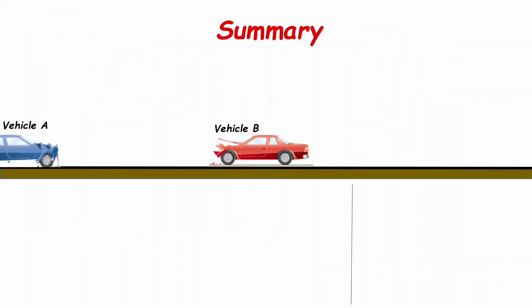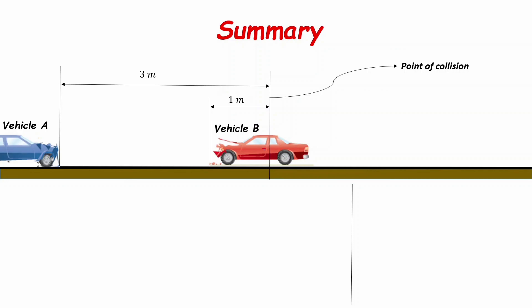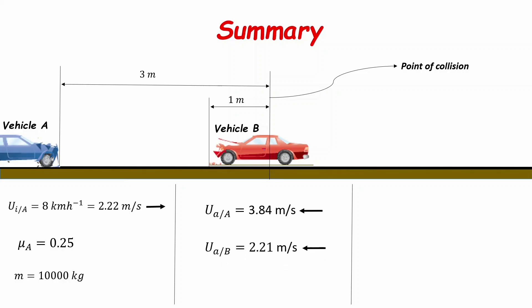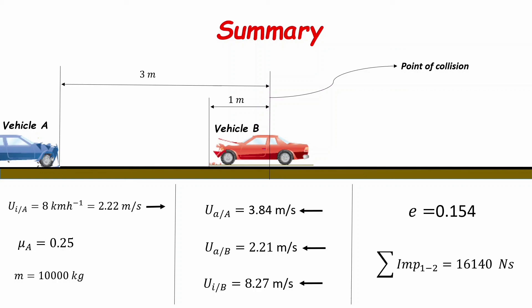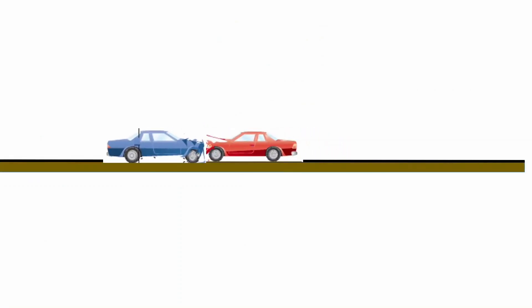To summarize, we had two vehicles that collided and traveled specific distances after collision — vehicle A moved 3 meters and vehicle B moved 1 meter. Given the initial velocity of vehicle A, the coefficient of kinetic friction, and their masses of 10,000 kg, we estimated the velocities of both vehicles after collision, then found the velocity of vehicle B before collision, the coefficient of restitution, and the impulse. Thank you for watching, and I hope you subscribe to the channel.